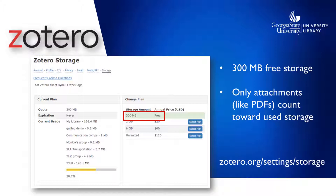You get 300 megabytes of free storage space on the Zotero server. Only attachments like PDFs count against this limit. You can have an infinite number of citations, as long as your attachments are less than 300 megabytes total. You can purchase more storage space inexpensively from the Zotero website, but most people won't need that for a long time, if at all.